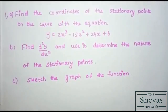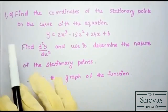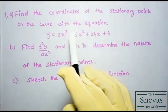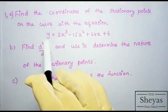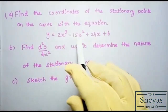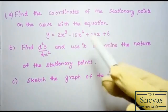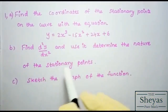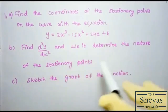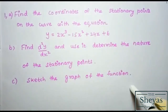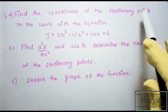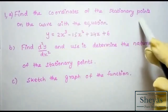This is one of the important problems in our portion. The question is: find the coordinates of the stationary points on the curve y = 2x³ − 15x² + 24x + 6. Part b requires finding d²y/dx² and using it to determine the nature of the stationary points. Part c requires sketching the graph of the function.